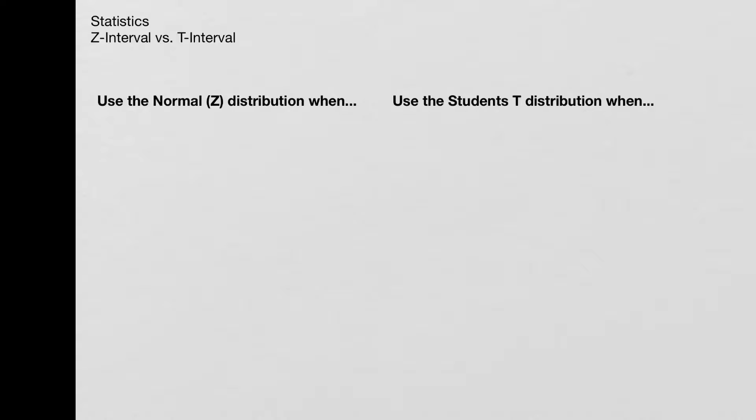So I have a list of things that will tell you whether it's a z or normal distribution or the student's t-distribution that you should be using. First of all, if they tell you the population standard deviation, so they specifically say population standard deviation, then you're going to use the normal distribution, because population standard deviation is sigma.